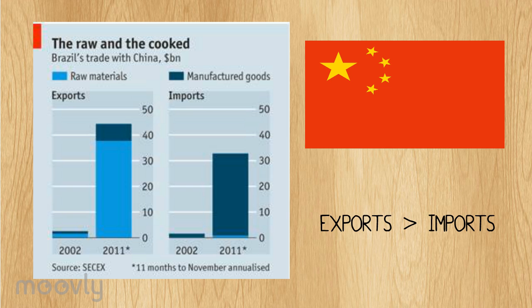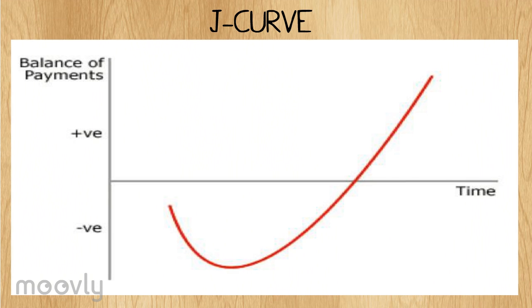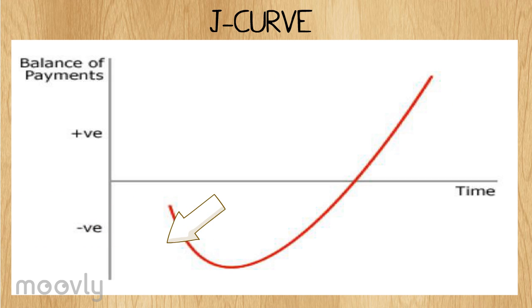However, this leads to a current account deficit in Brazil due to the contradiction. As you can see in the J-curve, it shows that the current account deficit firstly decreases, as other countries wouldn't realize automatically that prices have decreased and some contracts for goods cannot be broken.